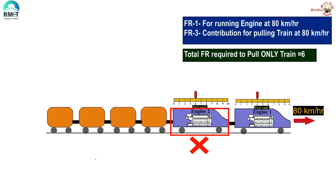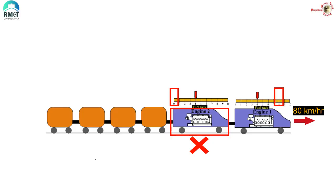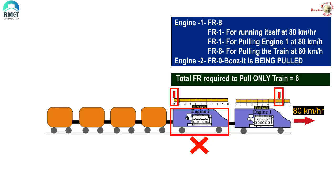Now suppose in engine number two the fuel stops flowing due to some problem. Engine one will continue to pull not only the train but also engine two at the same speed, since engine two is connected to engine one. What will be the fuel rack reading of engine two? The fuel rack of engine two is going to be zero, because the governor has realized there is no need to release fuel since the engine is already running at 80 km/h — being pulled by engine one.